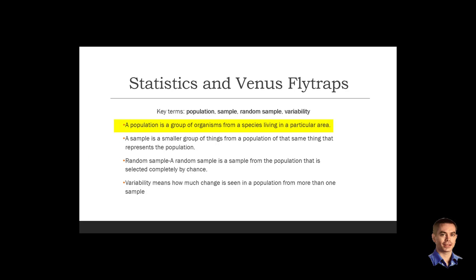Population is a group of organisms from a species that lives in a particular area. A sample is a smaller group of things from a population of that same thing that represents the population. A random sample is a sample from the population that's selected by chance. And variability means how much change is seen in a population when you take more than one sample.